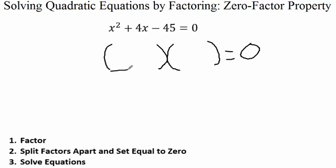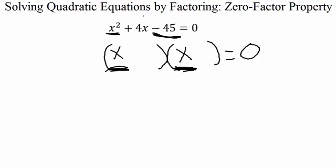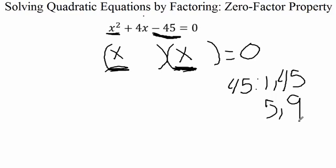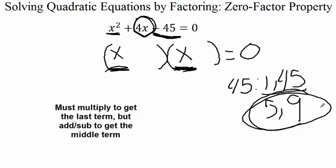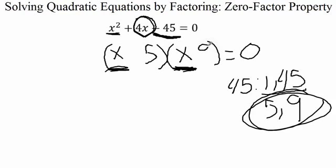Since we have a trinomial with a leading coefficient of one, we're going to use reverse FOIL. For the first spots, x times x gives us x squared. Then we look at our last term, 45, and list all possible factors: 1 times 45, and 5 times 9. We need the combination that adds or subtracts to get our middle coefficient of 4. The only way is 5 and 9, since 9 minus 5 equals 4.